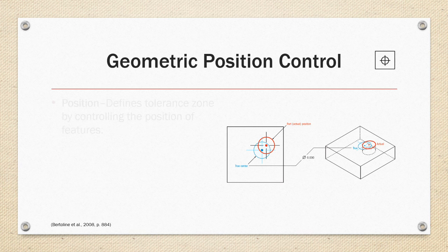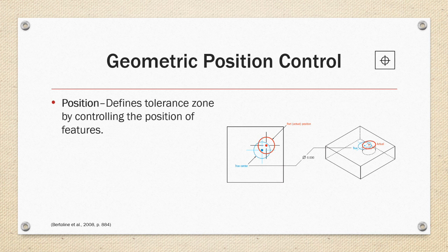Position controls define the tolerance zone by controlling the position of a feature. In the example on the right, we have the theoretical or true position for a theoretically perfect part. The red circle represents the actual position. Provided the part falls within the tolerance zone of the true center, the part is compliant. So in the example, the center of the hole has to fall within a circle of .03 to be within tolerance.